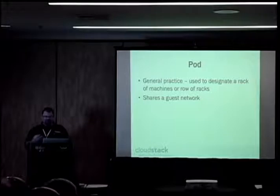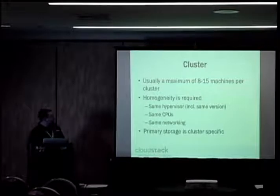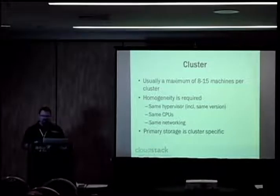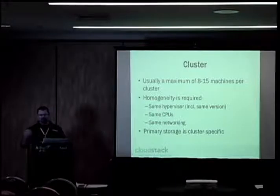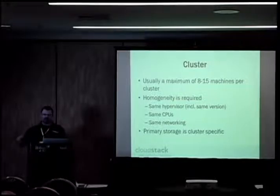A pod is another logical definition — you can use it for a rack or a row of racks. Pods share a guest network, and you don't need homogeneous machines within a pod. Within a cluster, you usually have a maximum of 8 to 15 machines, and you do require the same CPU, RAM, hypervisor, and networking type. Migration happens at the cluster level — if a host falls over, CloudStack migrates your instance to another machine in the same cluster.